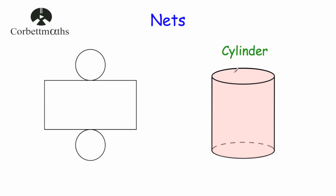Our next 3D shape is a cylinder. We've got a circular face at the bottom, a circular face at the top, and a curved face going around the outside. This is the net of a cylinder: we start with a rectangle and roll it round to form the curved face on the outside, and then we've got a circle for the top and a circle for the bottom. So the net of a cylinder is a rectangle with a circle on the top and a circle on the bottom.